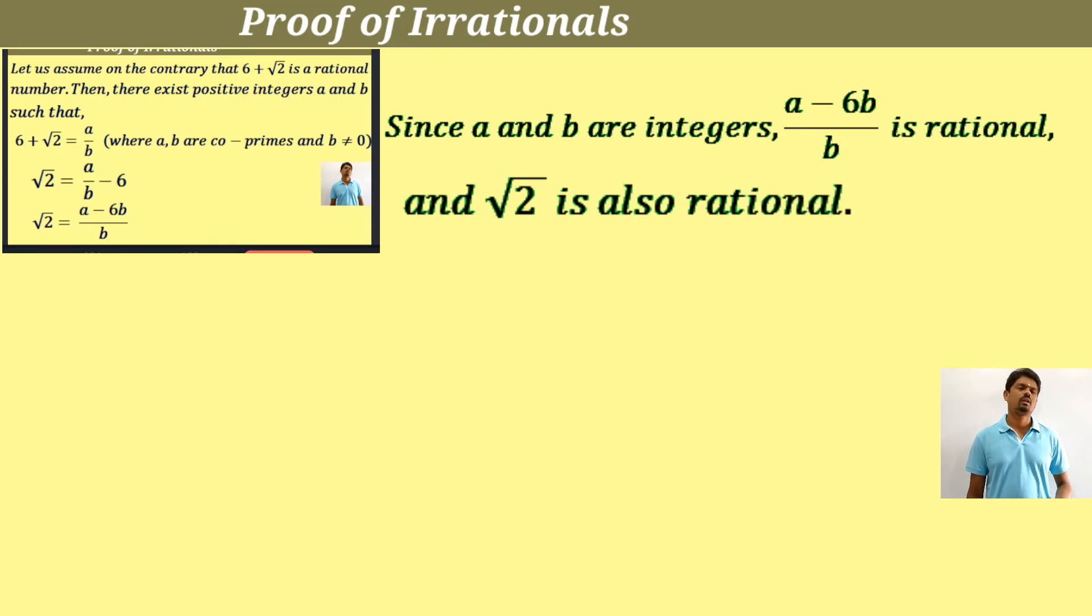But root 2, it is very clear, we know root 2 is irrational, but we have here root 2 is rational. Why has this arisen? In the very first, we thought that 6 plus root 2 is rational. Hence, it has arisen.